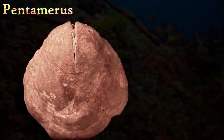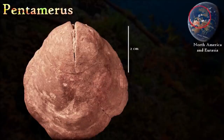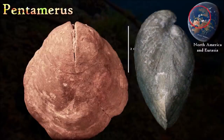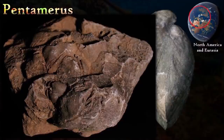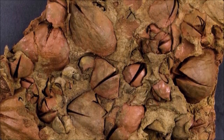Pentamerus was large, with two outward-curving valves or shells; its length was usually greater than its width. The pedicle valve beak was prominent, and the opening where the animal's fleshy stalk protruded lay just beneath it. Its shell surface was almost smooth but featured fine radial ribs and fine growth lines. Inside, a thin dividing wall was located nearest the pedicle beak and supported a large spoon-like structure that acted as a muscle attachment area.